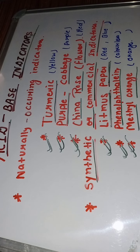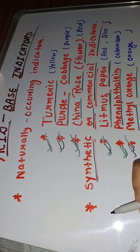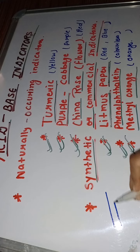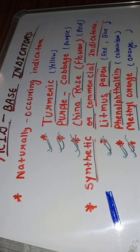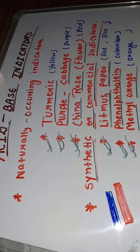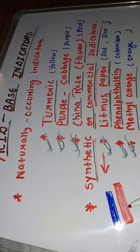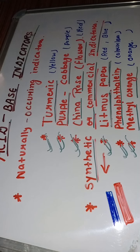Now we use these indicators to test acid and base. Synthetic or commercial indicators — litmus paper is commonly available as a solution or paper strips, as blue litmus paper and as red litmus paper. Litmus paper comes in solution form also. Let's take a look at these indicators, how they are used and their reactions.